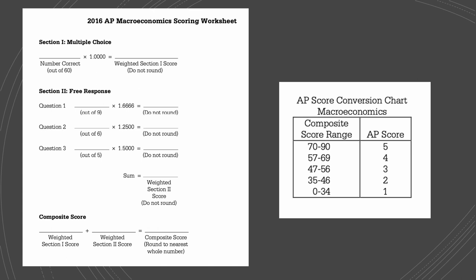Your AP score is a weighted average of two sections — multiple choice and free response. The multiple choice has 60 MCQs, each worth one point. The free response section has three questions; the first has a higher weight than the other two. The weighted average of the two sections gives a composite score on a range up to 90, which is then converted to your AP score from 1 to 5. This range varies slightly from year to year, but gives you a general idea of what you need to achieve a 4 out of 5.